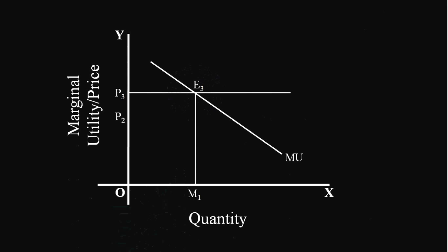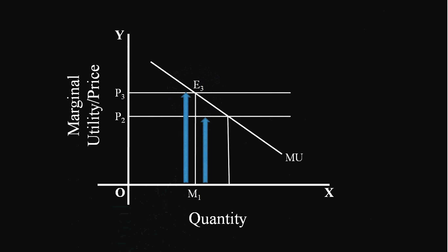Price falls to P2. Now marginal utility is greater than price, so the consumer is not in equilibrium. To be in equilibrium he has to increase his consumption. Now he consumes M2 quantity of the commodity and reaches equilibrium at E2. At P2 price, the consumer buys M2 quantity — it is a point again on the demand curve.